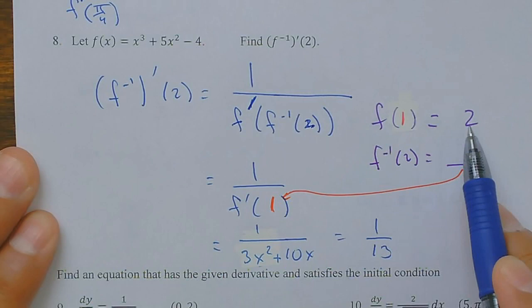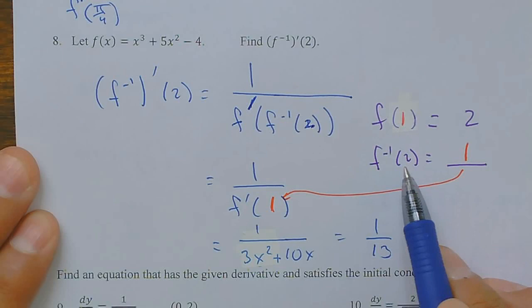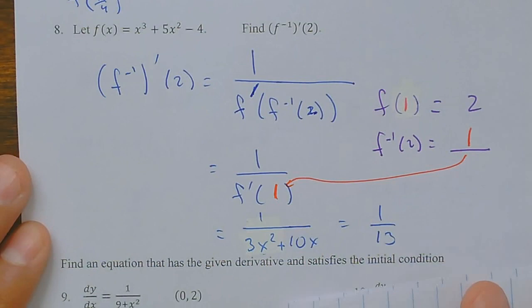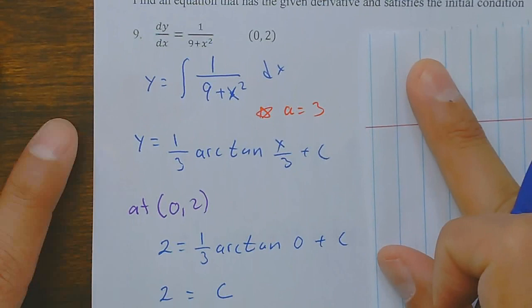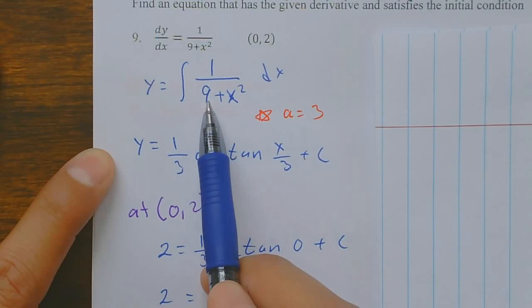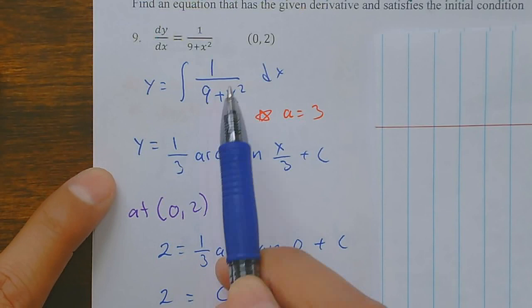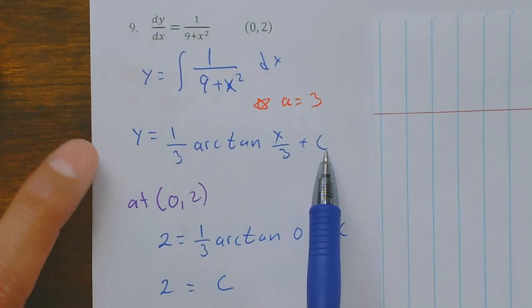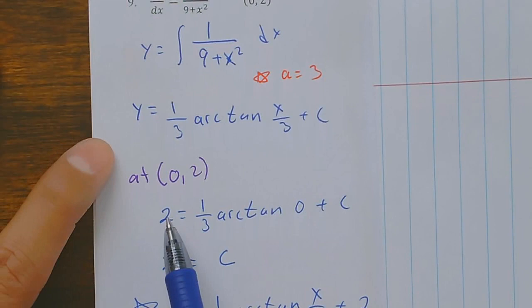Number nine: find the equation that has the given derivative at a given point. I integrate the derivative and recognize it as arc tangent with the a value being squared — a equals 3. The integral gives one over a times arc tan of u over a, plus constant C. Given the point (0, 2), the arc tan of 0 is 0, so C equals 2. The final answer is y equals one-third arc tan of x over 3, plus 2.